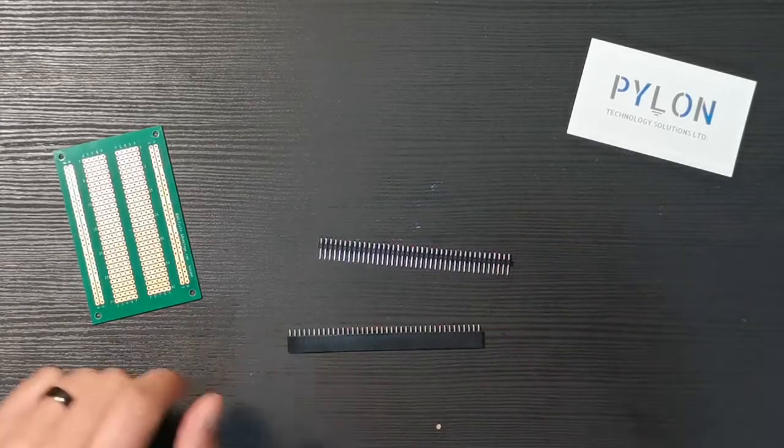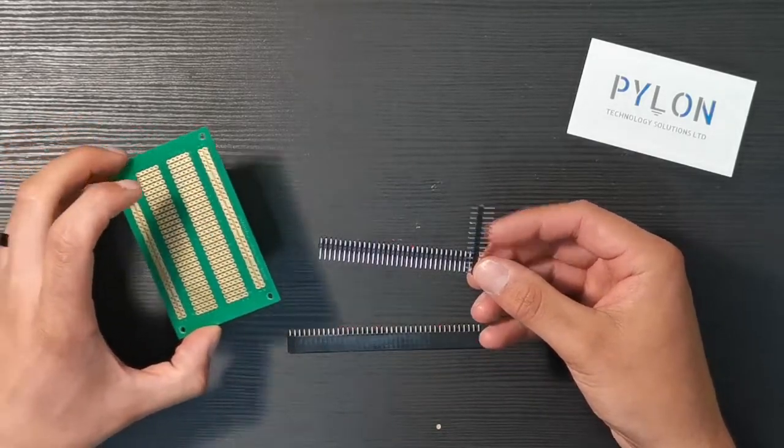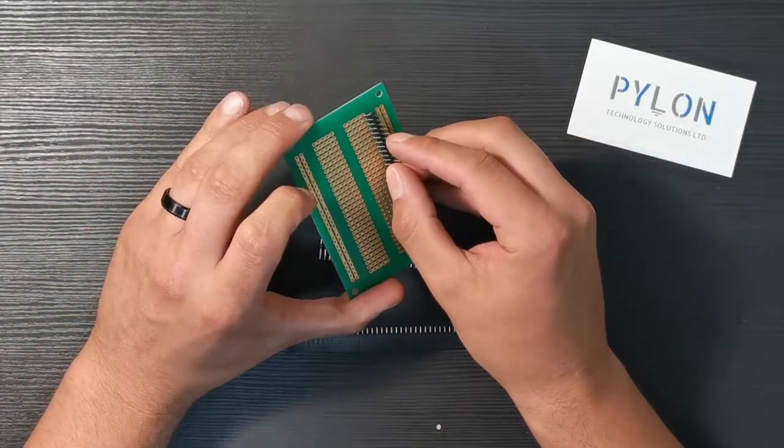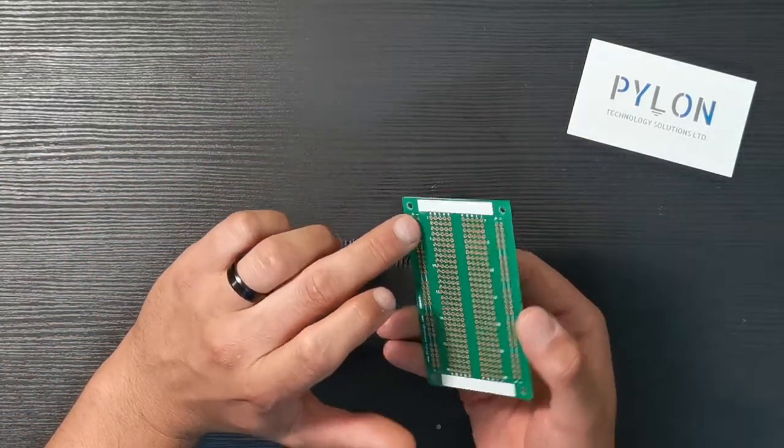So for example I have a small section here of a male header. You would put your male header in like this and solder the back.